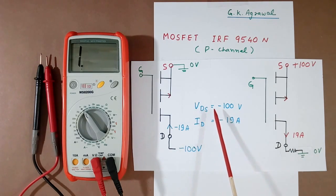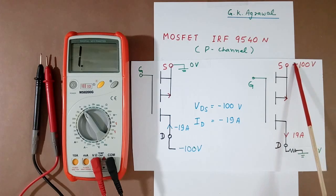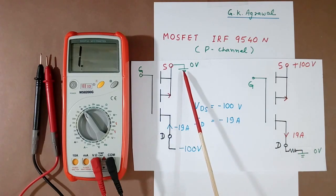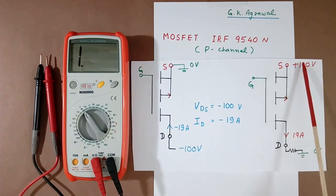If we see the datasheet, they will write VDS is equal to minus 100V. Means if this is 0V, this terminal can go up to minus 100V. Same thing here, if we ground this, here this voltage is higher by 100V. Similarly here, this voltage is higher by this voltage, plus 100V. So there is no difference between this and this. If you write 0 here, it will be minus 100. If you write 0 here, it will be plus 100.